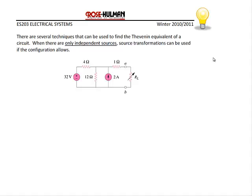There are several techniques to find Thévenin and Norton equivalents, but when the configuration allows, source transformations are the simplest. Consider a circuit with a 32-volt source in series with a 4-ohm resistor, in parallel with a 12-ohm resistor and a 2-amp current source in series with a 1-ohm resistor. The load resistor R_L, shown as a variable resistor (potentiometer), is removed, and we find the Thévenin equivalent to the left of terminals A and B.